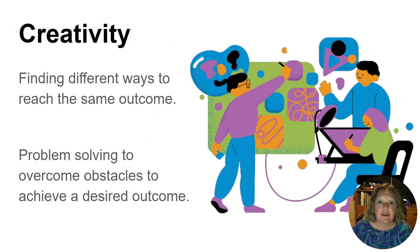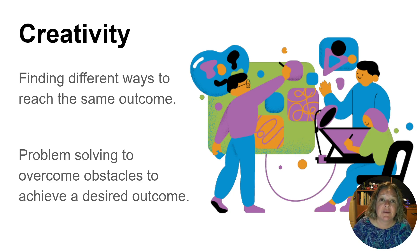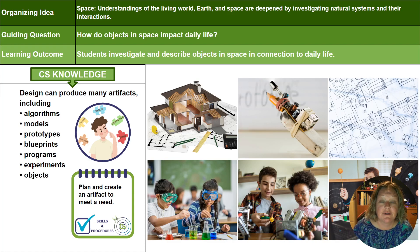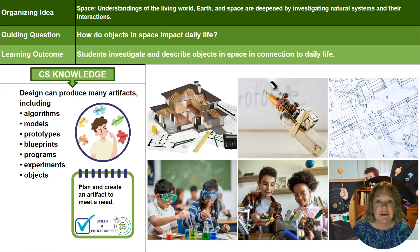While we have specific knowledge, understandings, skills, and procedures, we also have these overarching ideas that are the common threads from Kindergarten through Grade 6 computer science. In Grade 4, students are asked to plan and create an artifact to meet a need. This skill or procedure opens the door to use it across your science topics and other subjects, because an artifact can be anything from an algorithm to a model, a prototype, an experiment, or an object.